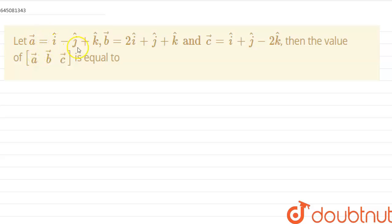Let a vector be i cap minus j cap plus k cap, b vector is 2i cap plus j cap plus k cap, and c vector is i cap plus j cap minus 2k cap.